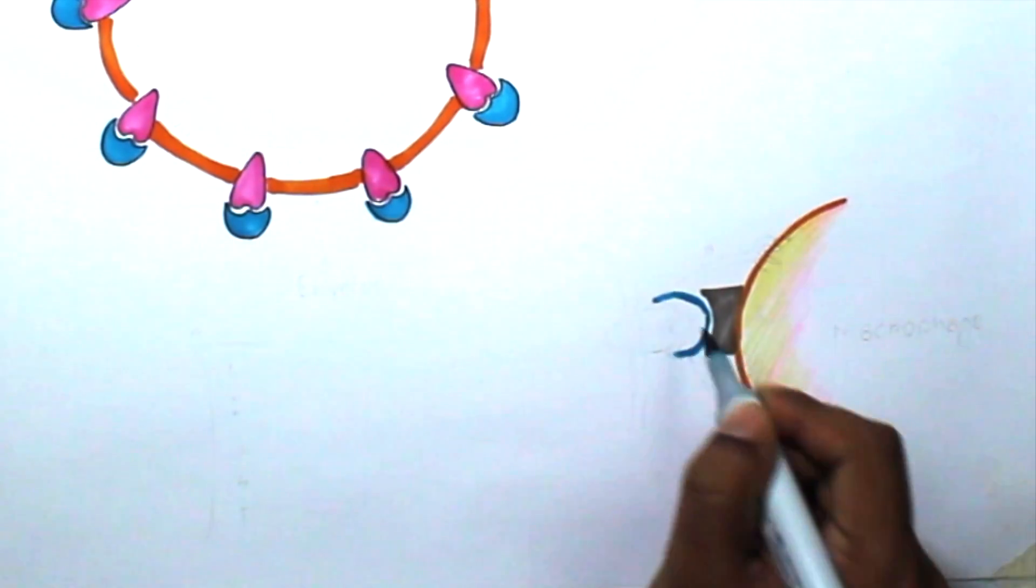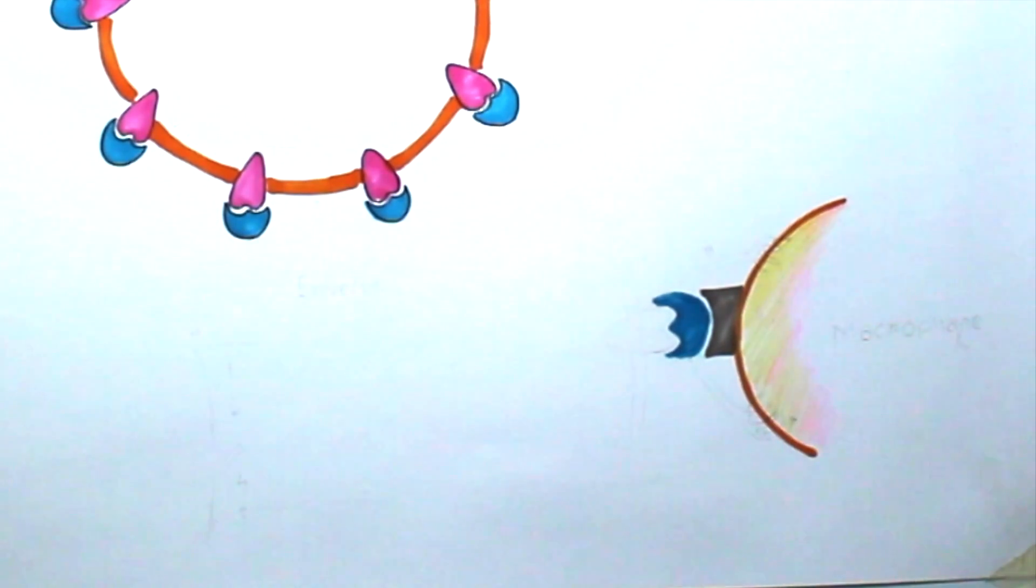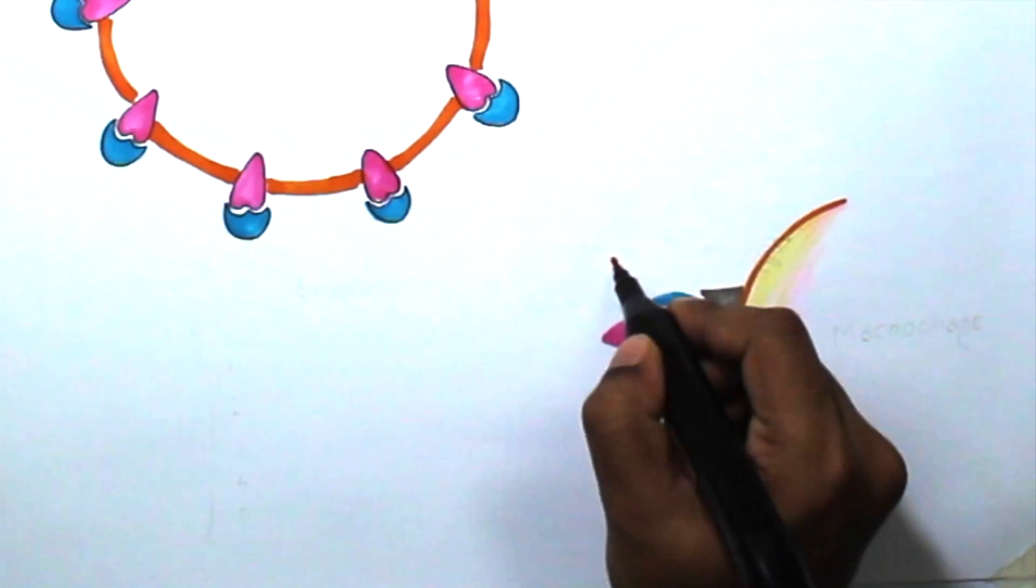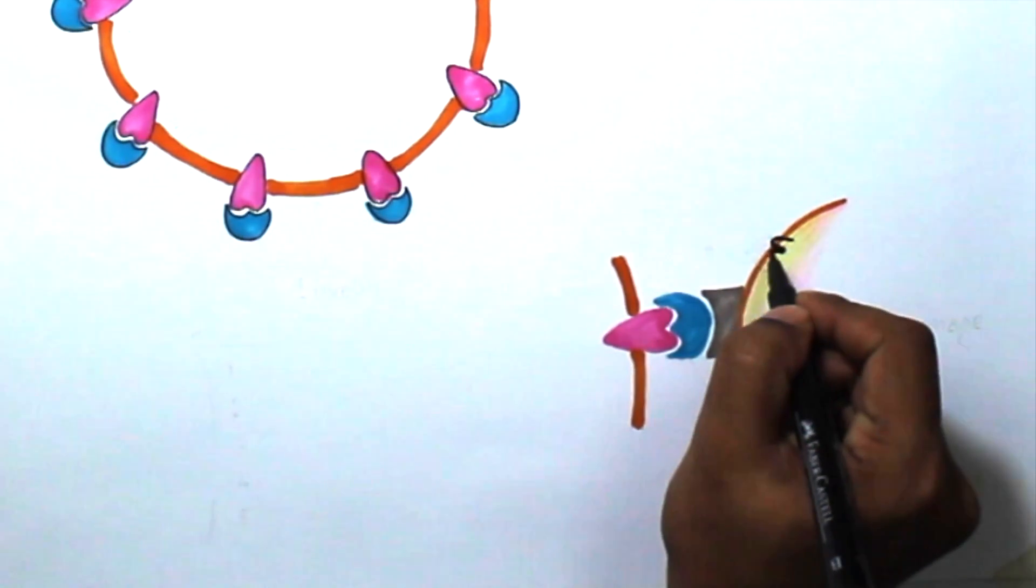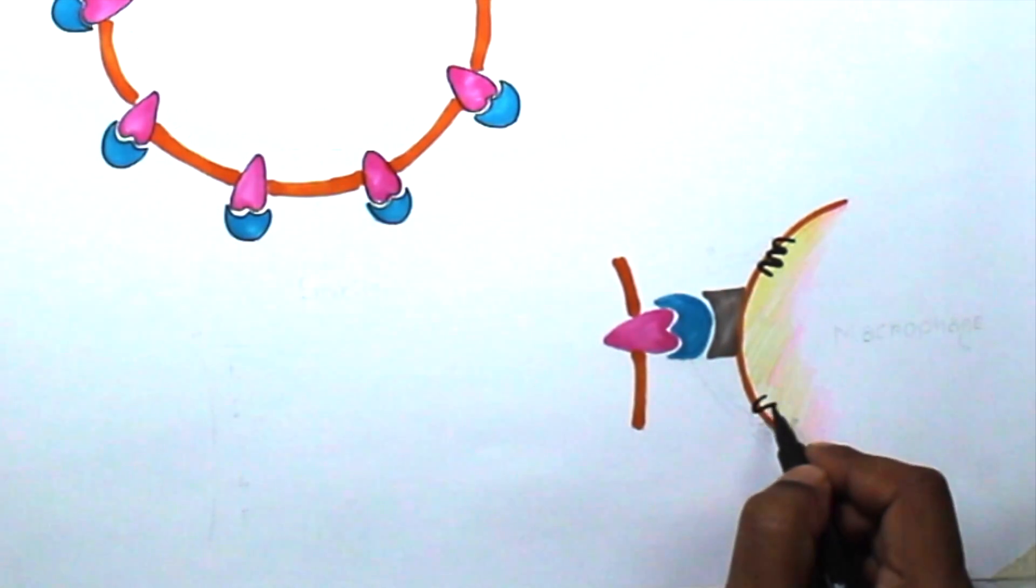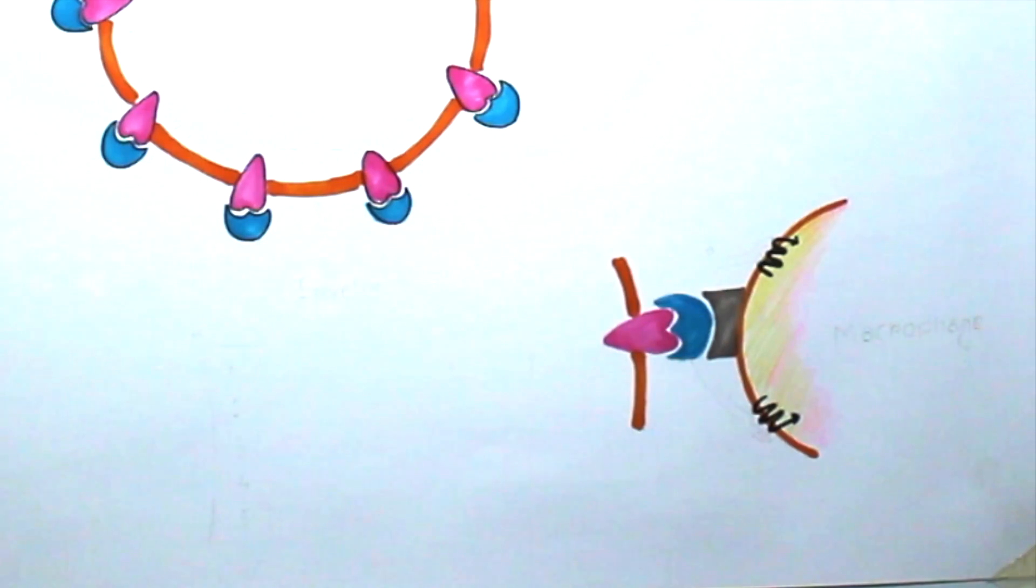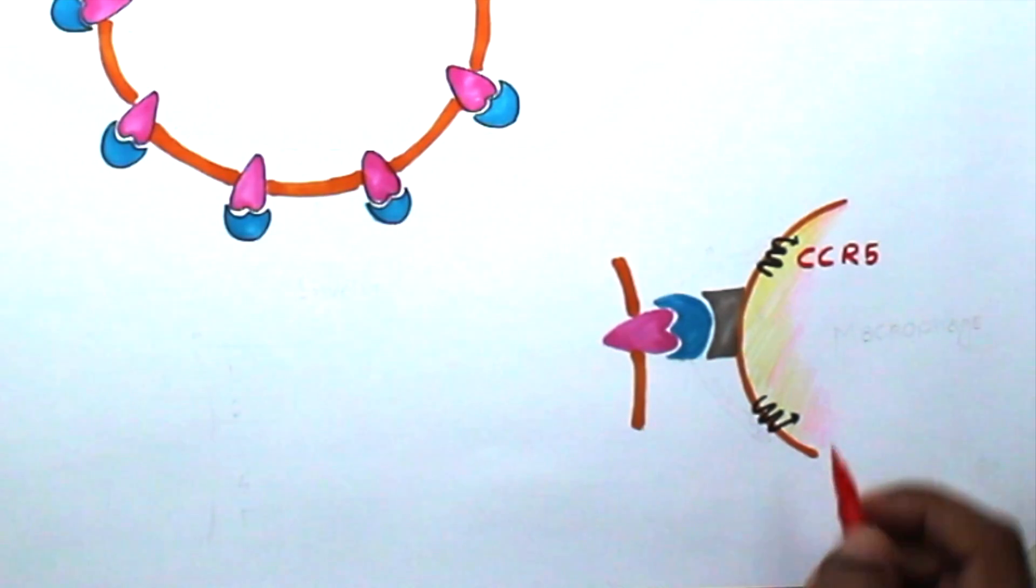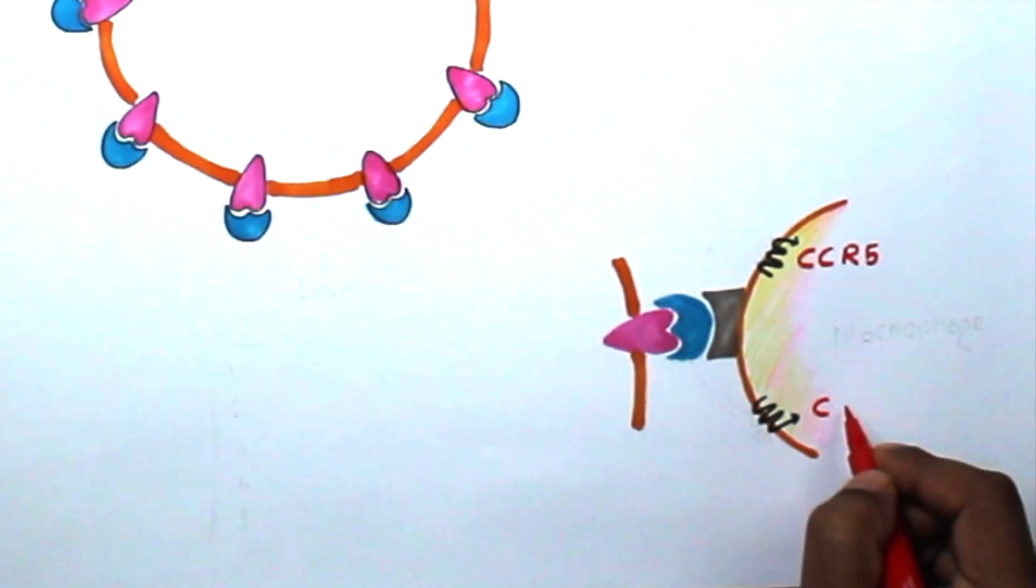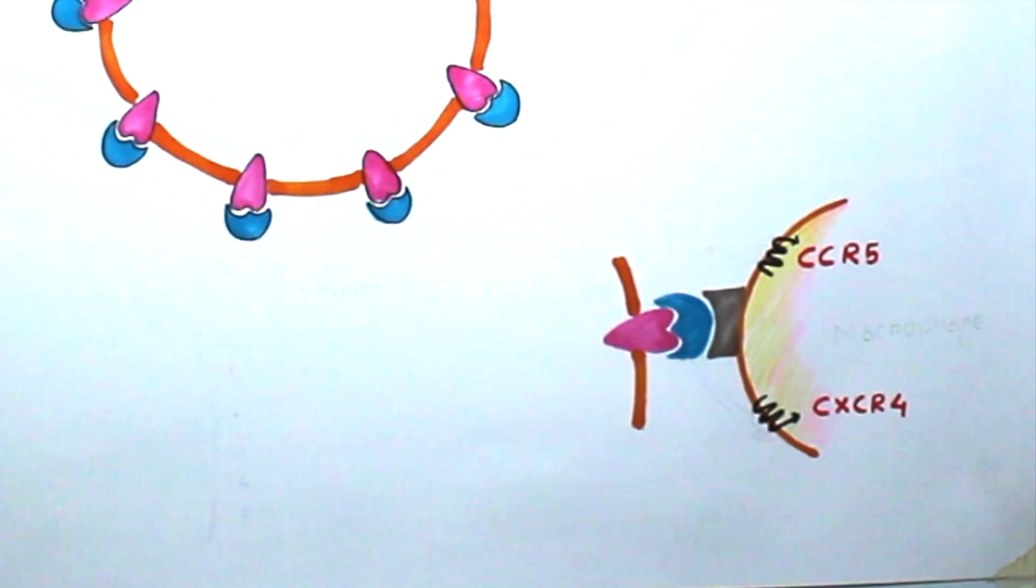Here, the GP120 molecule loves to bind with the CD4 molecule. It is called primary attachment. As soon as GP120 attaches with the CD4 molecule, the CD4 positive cells get activated and express some other chemokine receptors, such as CCR5 or chemokine receptor 5 and CXCR4. They are accessory receptors or co-receptors.